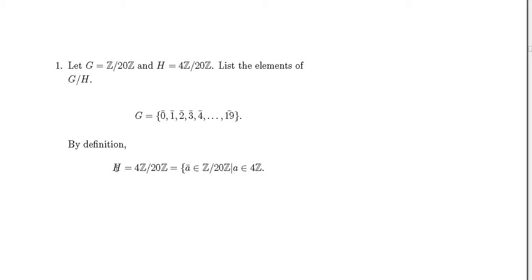Now that we have the elements, by definition H, which is 4Z/20Z, will be all the a bar that are in Z/20Z such that a is in 4Z. This is the definition. This H element will be 4Z/20Z, which equals 0 bar, 4 bar, 8 bar, 12 bar, 16 bar.